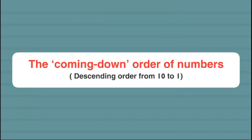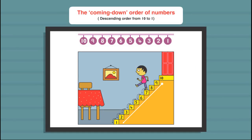The coming down order of numbers — descending order. Go down the steps from 10 to 1 and say: 10, 9, 8, 7, 6, 5, 4, 3, 2, 1.